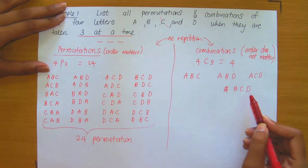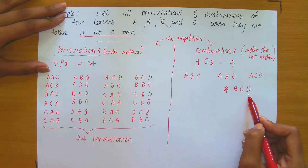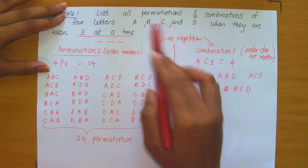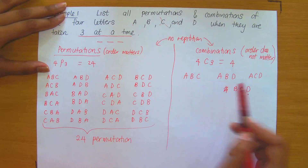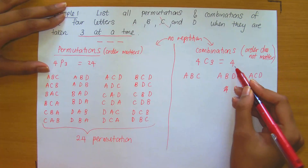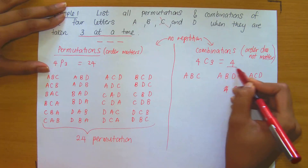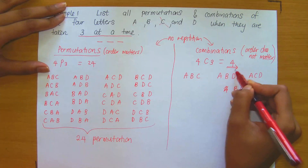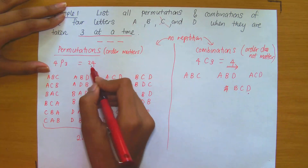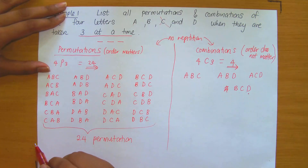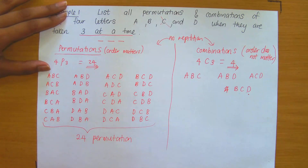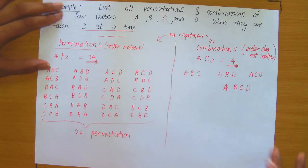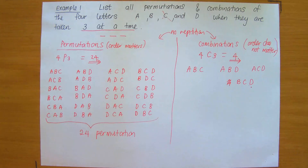So these are the four combinations of the letters A, B, C, D when chosen three at a time. As you can see, we were told we would only have four in the case of combinations and 24 in the case of permutations.